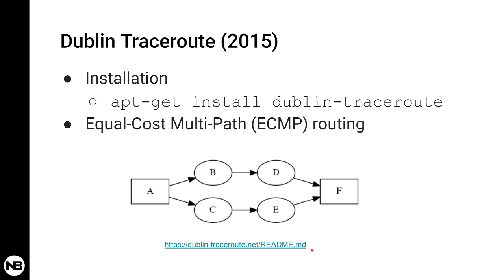I'm sure all of you are very aware of what traceroute does — it gives you the hop-by-hop information that a network flow goes through from one host to another. Now, when there is equal cost multipath routing between hosts, traceroute in many cases is not accurate or adequate, and may give you even wrong and impossible information.